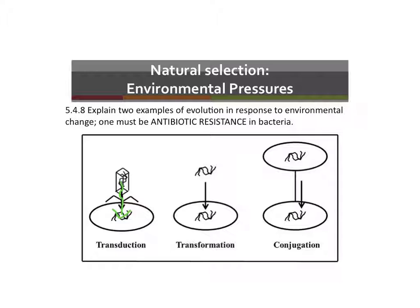Transformation refers to DNA just entering the cell by itself. And conjugation actually uses something called a pilus, which is a sort of tube that connects two bacteria, and they can pass along DNA freely through that pilus.